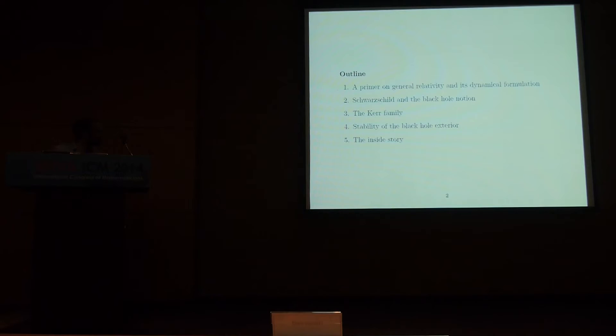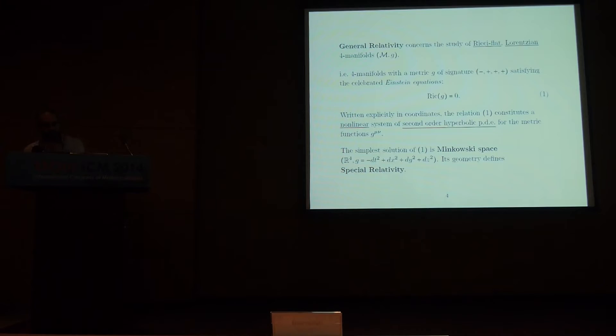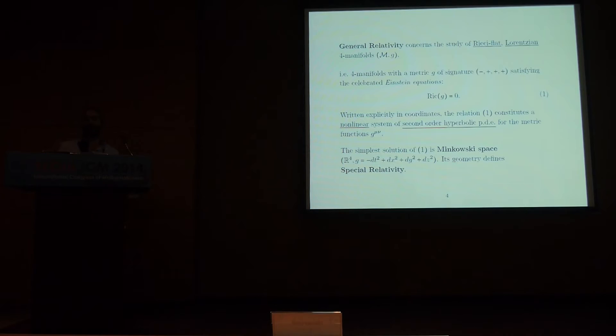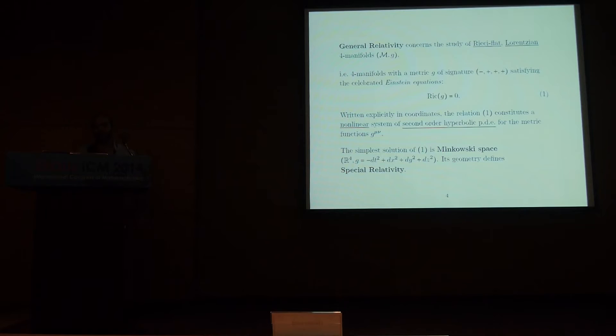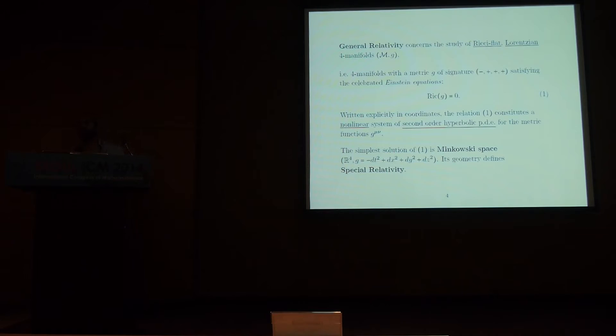Onward to the primer on general relativity and dynamics. General relativity, for the purpose of this talk, is simply the study of Ricci-flat Lorentzian four-manifolds. That's to say, four-manifolds with a metric which, unlike the Riemannian case, has signature minus plus plus plus — that's a Lorentzian manifold — which satisfy moreover the celebrated Einstein vacuum equations. This is just the relation that the Ricci curvature of this metric is zero. Written explicitly in coordinates, this constitutes a nonlinear system of second-order partial differential equations for the metric functions g_{μν}. In a natural sense, these equations are hyperbolic — whereas in Riemannian geometry they would be elliptic, because of the Lorentzian signature, these equations are hyperbolic.